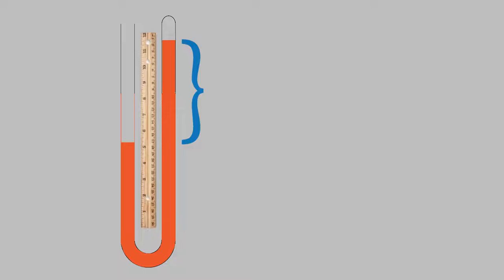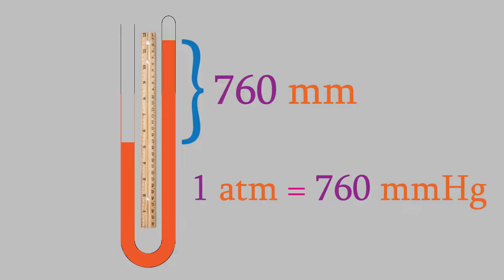It turns out that if we use a manometer to measure the average pressure of air at sea level, the difference in height between the two columns is 760 millimeters. For that reason, the unit we use when we measure pressure is millimeters of mercury, or mmHg. Another unit we use for pressure is the atmosphere, which is the pressure of air at sea level. So, one atmosphere is equal to 760 millimeters of mercury.